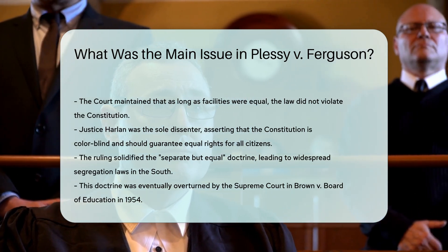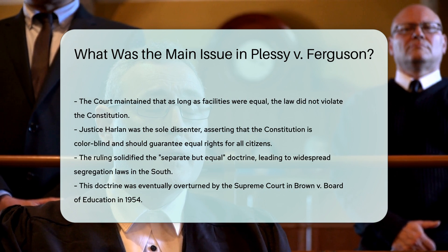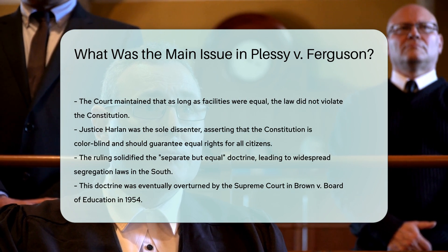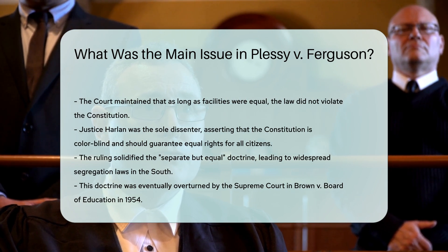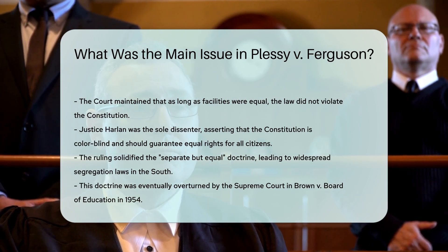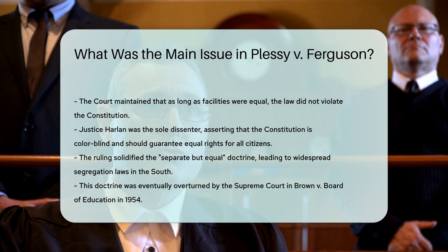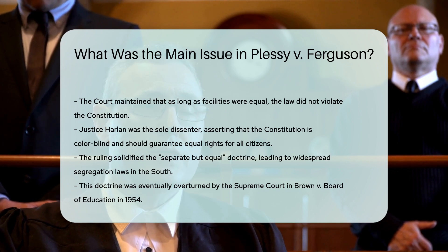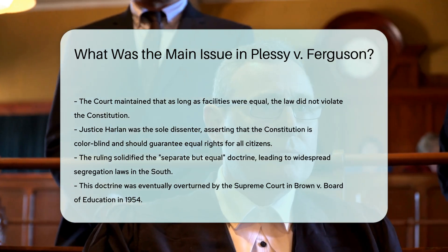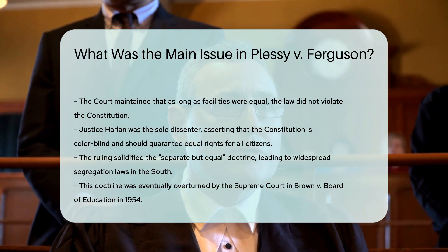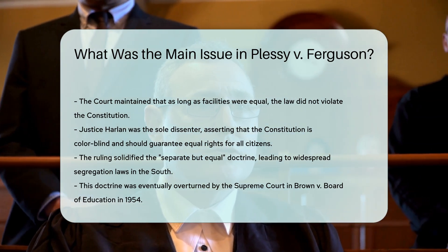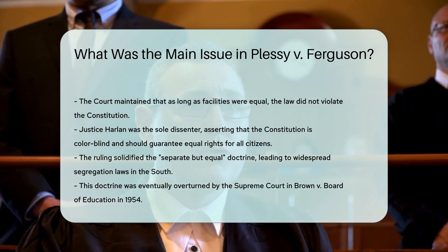The decision had significant implications, as it solidified the 'separate but equal' doctrine, allowing similar segregation laws to spread across the southern United States. This doctrine remained in place until it was eventually overturned by the Supreme Court in Brown v. Board of Education in 1954.